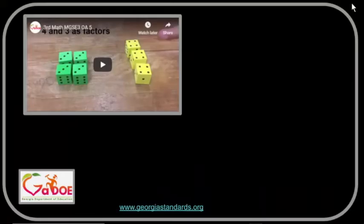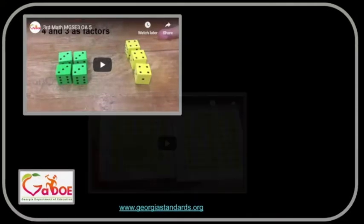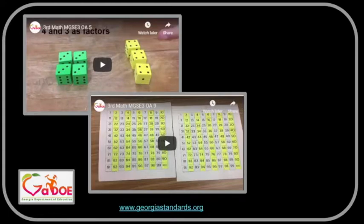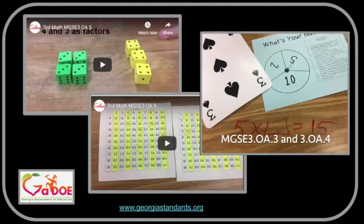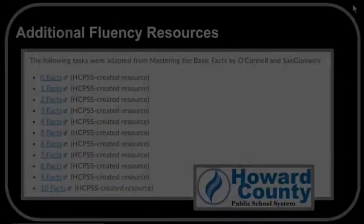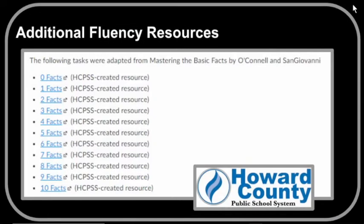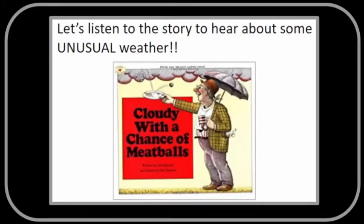For additional ideas and resources for developing fluency, please view the videos on the properties of operations, multiplication patterns, as well as the video on the relationship between multiplication and division. These videos can be found at GeorgiaStandards.org. You can also access a variety of targeted tasks from Howard County School System that focus on helping students build fluency through engaging activities. Each activity starts off with a connection to literature.